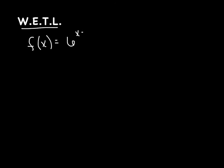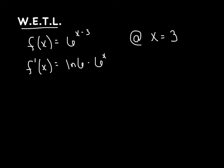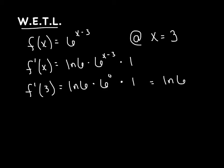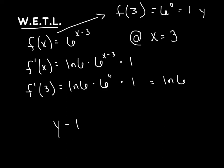It certainly wouldn't be a calc video without writing the equation of a tangent line. Consider the function 6 raised to the (x minus 3) power, and write the equation of the tangent line when x equals 3. We calculate the derivative: natural log of the base times the original function times the derivative of the exponent. Evaluating at x equals 3: natural log of 6 times 6 to the 0 times 1, which is just the natural log of 6. The only other thing missing is the y value — f(3) gives 6 to the 0, which is 1.